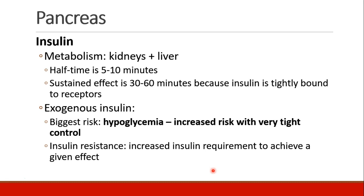When we give exogenous insulin, the biggest risk of course is hypoglycemia, and if we attempt very tight glucose control, we may see more hypoglycemia as a side effect. Many diabetic patients, especially type 2 diabetics, become insulin resistant, where their insulin requirement goes up and up in order to achieve a given effect.